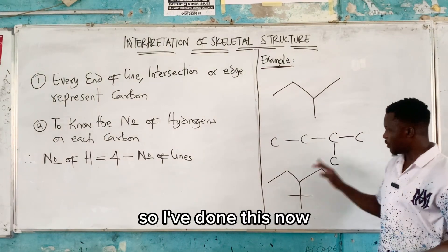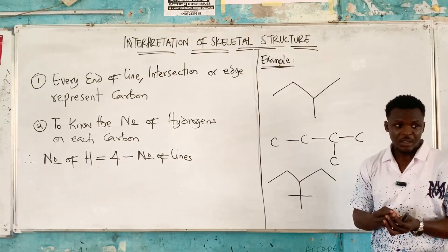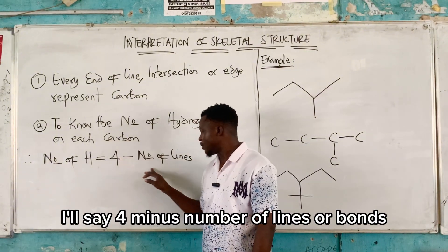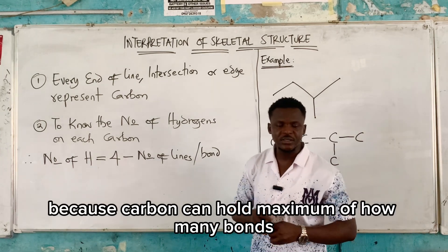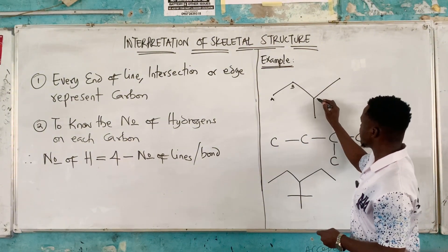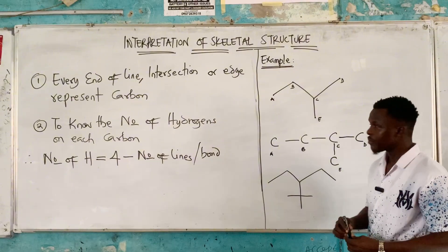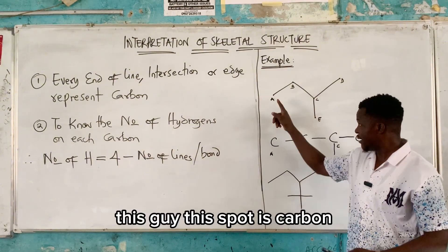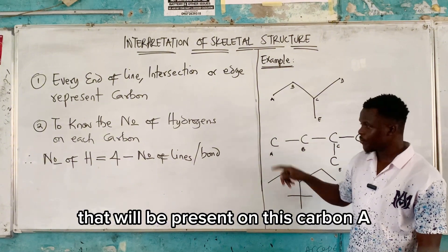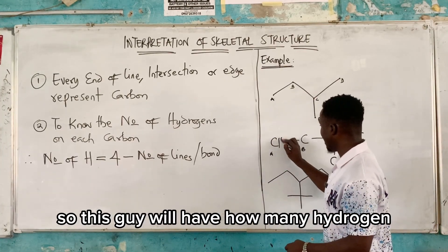To know the number of hydrogens on each carbon, I'll say four minus the number of lines or bonds. Why four? Because carbon can hold a maximum of four bonds. Let's label the positions A, B, C, D, and E. Carbon A has just one line attached to it, so four minus one is three — this carbon has three hydrogens. Carbon B has two lines, so four minus two gives us CH2.